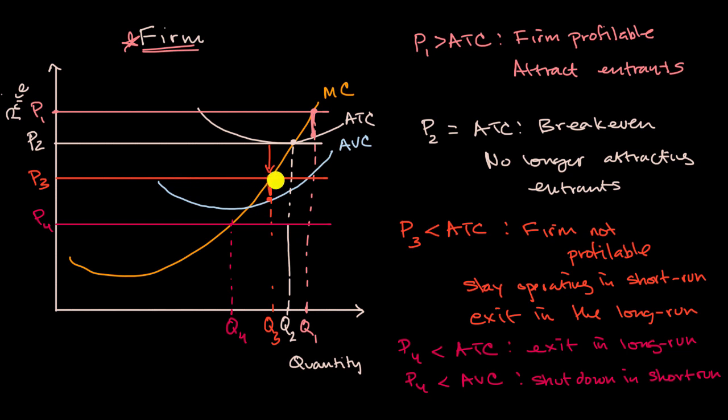At P sub three, in the long run, you'd want to exit because you're not profitable. If prices stay at P sub three, your price is below your average total cost at the rational quantity to produce. So in the long run, you would exit.